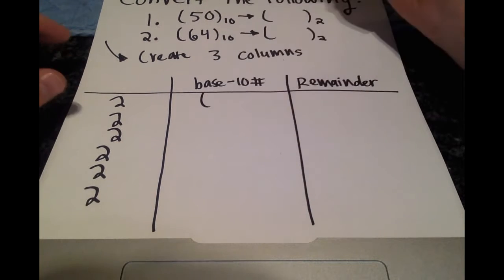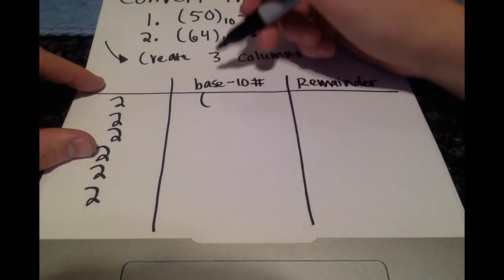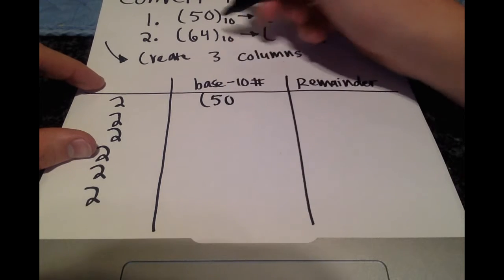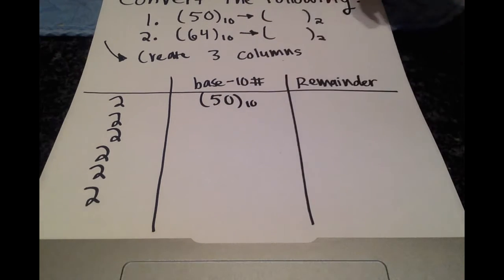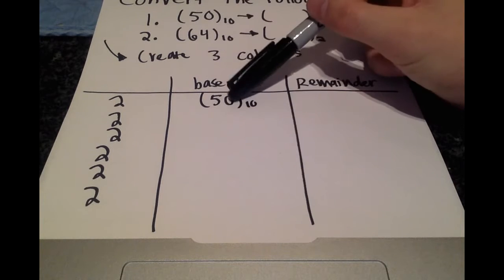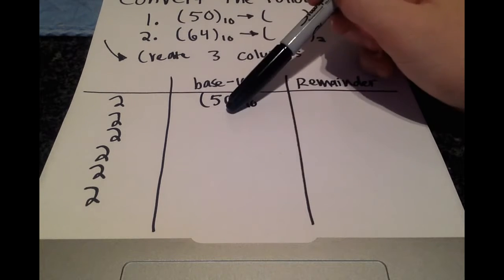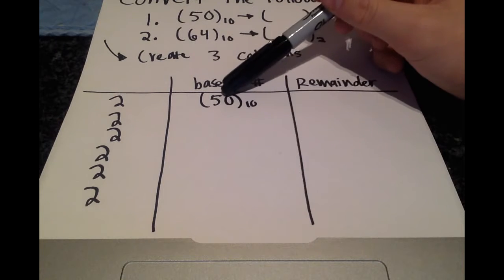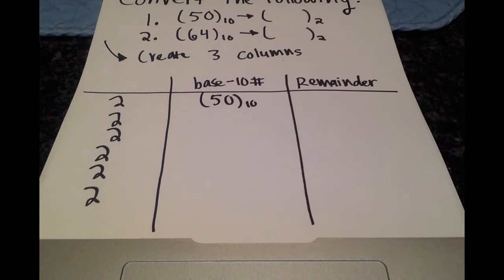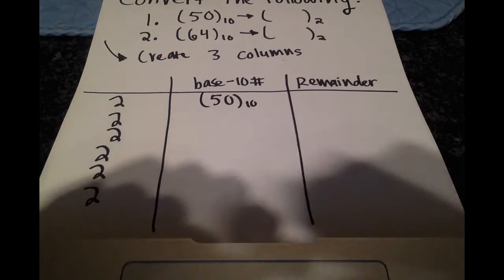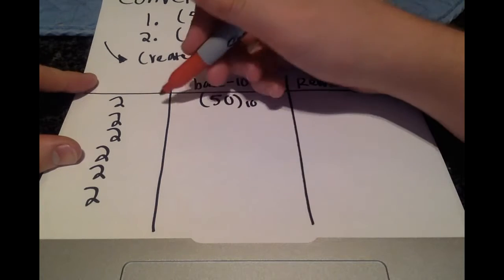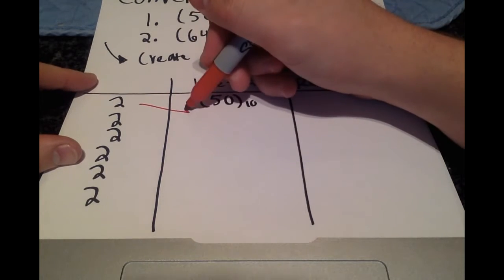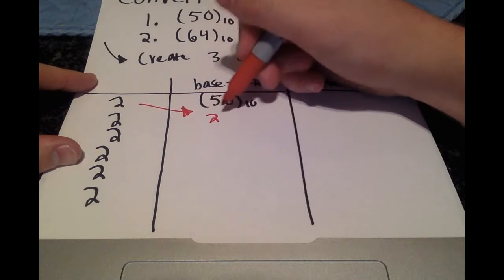You're going to start by writing your base 10 number — in this case it's 50. What you're going to do is divide this number by 2 and record the remainder, and you're going to keep doing this until you reach 0. So let's do that: how many times does 2 go into 50? 25 times, with a remainder of 0.